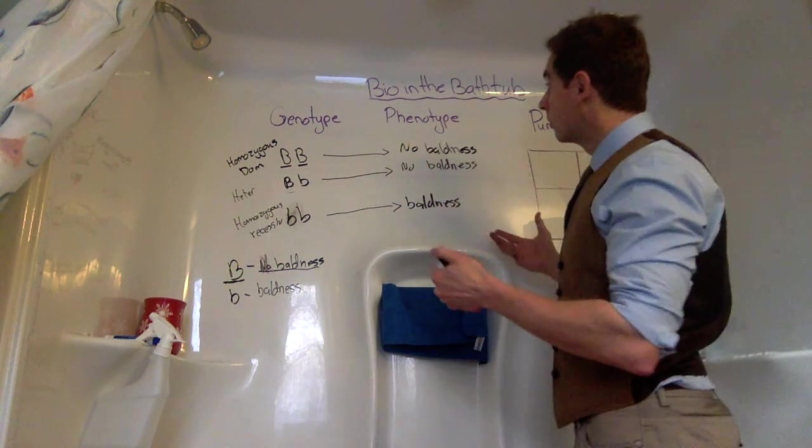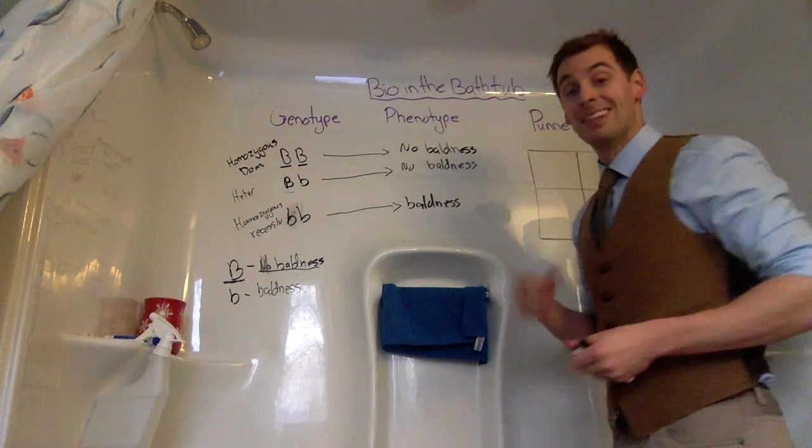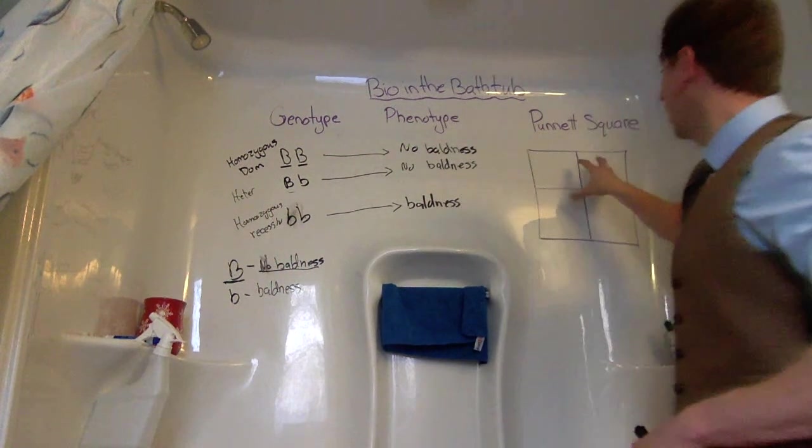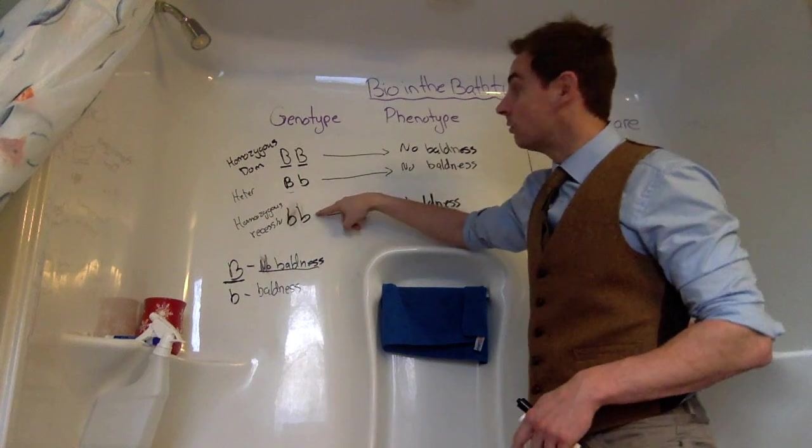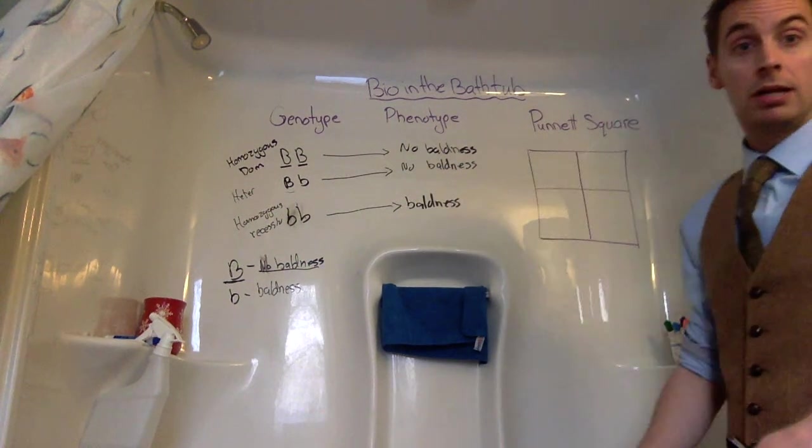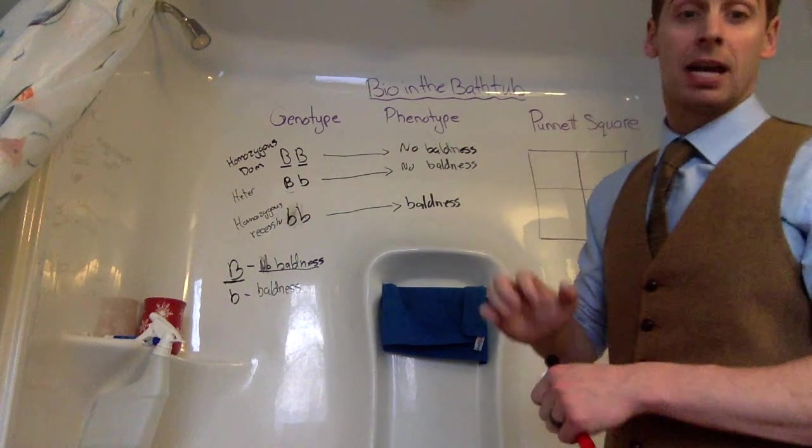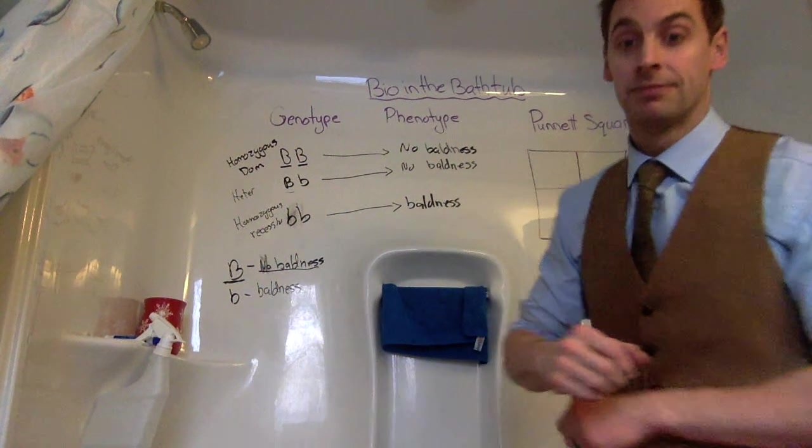So, as a quick overview of what a genotype versus a phenotype is, in the next video we're going to look at the Punnett square, right here. And we're going to compare when we mix two of these traits, what happens. So I hope you enjoyed this short video, which is 4 minutes and 30 seconds instead of 5. I'll see you on the next video looking at the Punnett square. Have a great day!